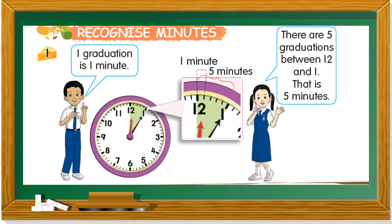Recognize minutes. One graduation is one minute. Counting: one graduation, two, three, four, five. So there are five graduations between number 12 and number 1. That is five minutes. One graduation is one minute — five graduations, five minutes.